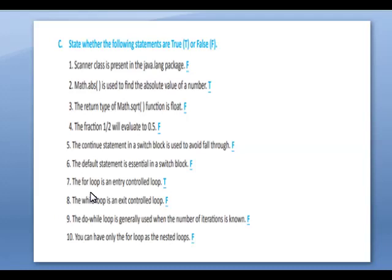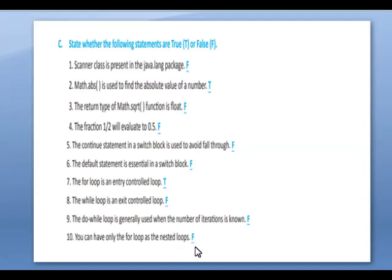The for loop is an entry control loop — True. The while loop is an exit control loop — False. The do-while loop is generally used when the number of iterations is known — False. You can have only the for loop as nested loops — False.